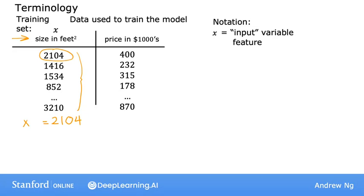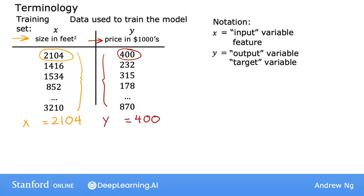The standard notation to denote the output variable, which you're trying to predict, also sometimes called the target variable, is lowercase y. So here, y is the price of the house. For the first training example, this is equal to 400, so y equals 400.